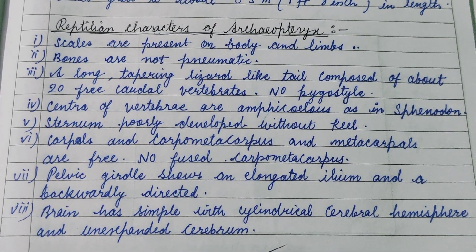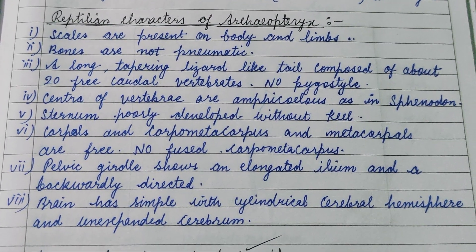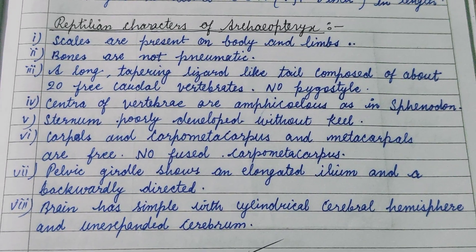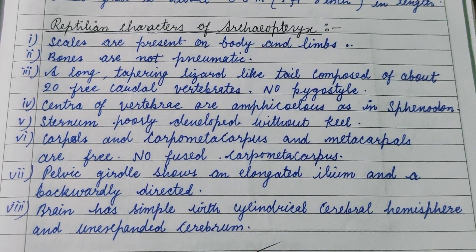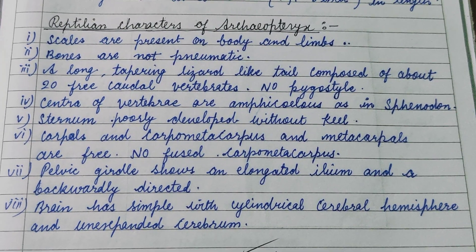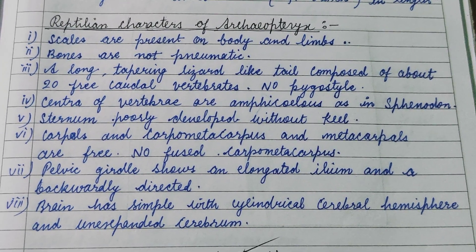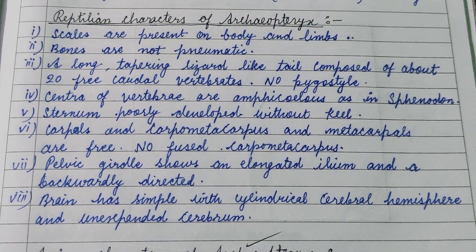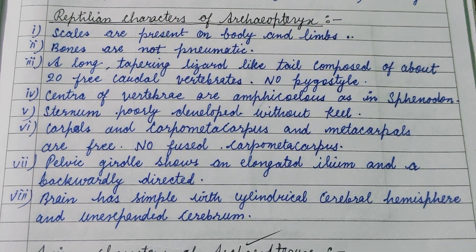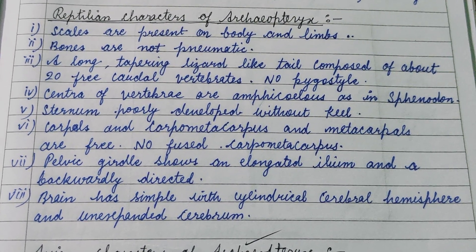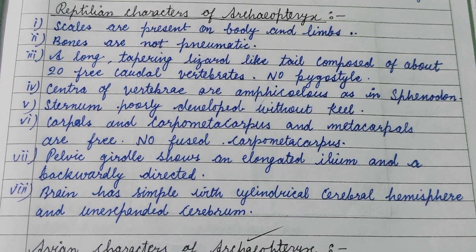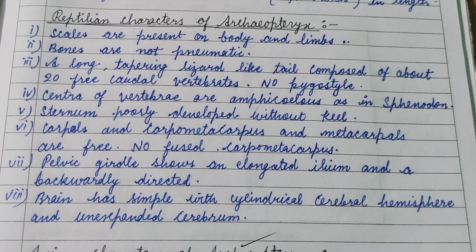Archaeopteryx possessed both reptilian and avian characters. Reptilian features include: scales are present, bones are non-pneumatic, a long tapering lizard-like tail composed of about 20 free caudal vertebrae, pelvic girdle shows an elongated ileum and a backwardly directed pubis, and the brain has a simple structure with cylindrical cerebral hemispheres.